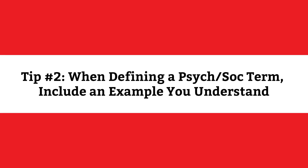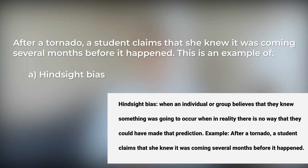This brings us to tip number two: when you define a psychosocial vocabulary term, include it with an example that makes sense to you. What is an example of hindsight bias? The example can come directly from the question itself. So we would write down: hindsight bias — when an individual or group believes that they knew something was going to occur, when in reality there's no way they could have made that prediction. Example: after a tornado, a student claims that she knew it was coming several months before it happened.